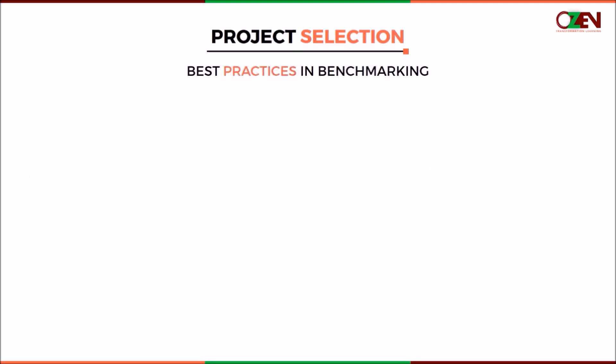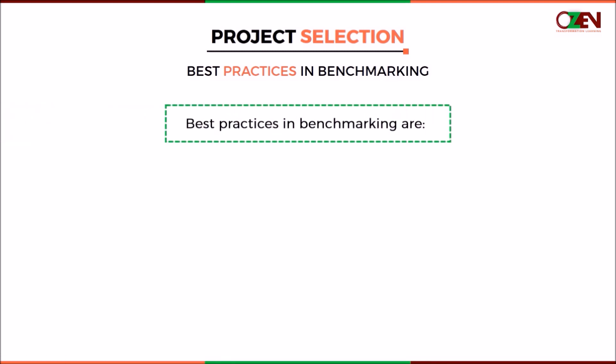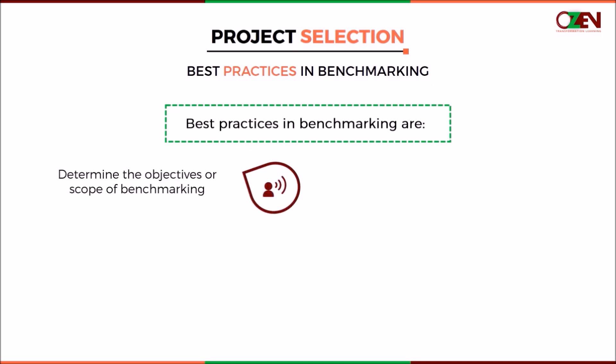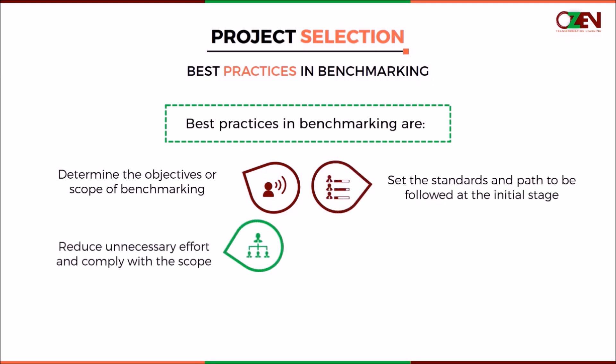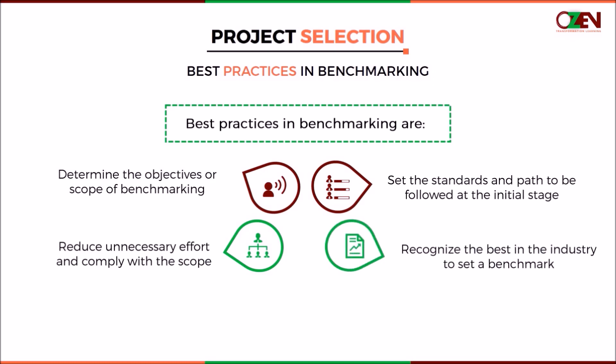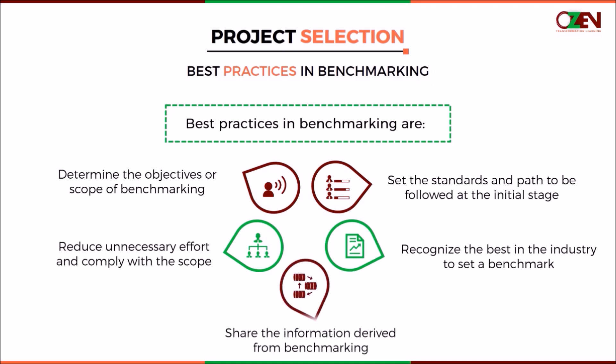To ensure continuous improvement and exceptional performance, it is important to follow the best practices. The best practices to be followed while benchmarking are: determine the objectives or scope of benchmarking; set the standards and path to be followed at the initial stage; reduce unnecessary effort and comply with the scope; recognize the best in the industry to set a benchmark; and share the information derived from benchmarking.